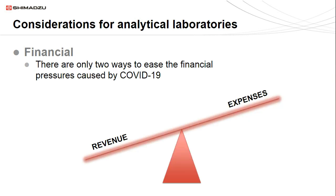The second part of the equation for labs to consider is how we can mitigate the financial impact of COVID-19 on our bottom lines. This essentially boils down to two factors: revenue and expenses. We would ideally like to increase our revenue while decreasing our expenses. COVID, while not having much of an effect on our expenses, is severely limiting our revenue, likely making our expenses outweigh our revenue. Despite our best marketing and sales efforts, it's going to be pretty difficult to add more weight to the revenue side during the pandemic. So we have much more control over reducing our expenses, and this is where we should be focusing our efforts. We'll spend the second half of this presentation discussing ways to reduce expenses in the lab, specifically related to new capabilities in gas management.